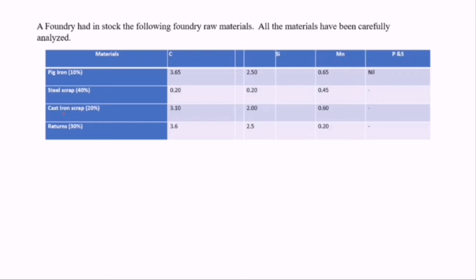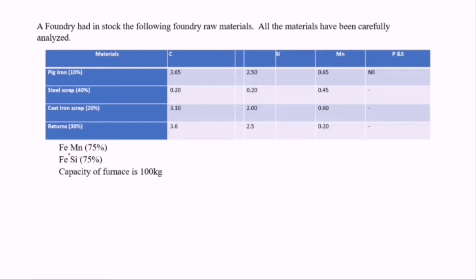When you sum all these up, you should get 100%. They've given us these values, and note that they are in percentage. So for the pig iron, the carbon is 3.65% of the pig iron — that is the percent of the 10%. They are also going to give us the capacity of the furnace, which is 100 kilograms. We have the ferro manganese to be 75%, and the ferro silicon to be 75%.